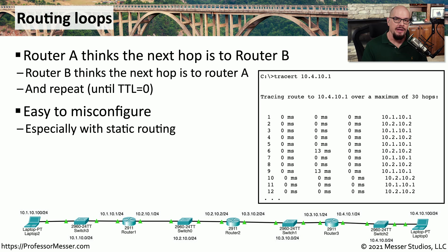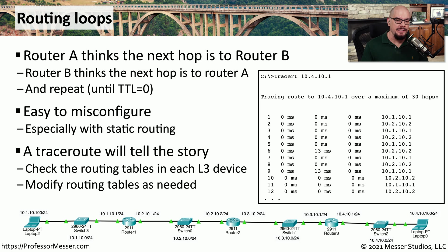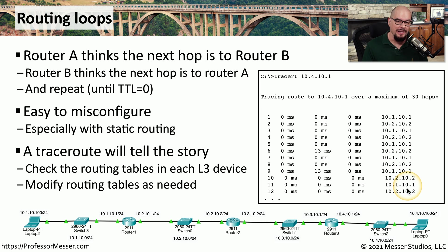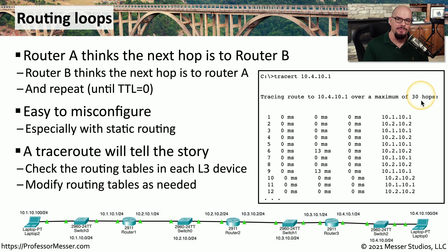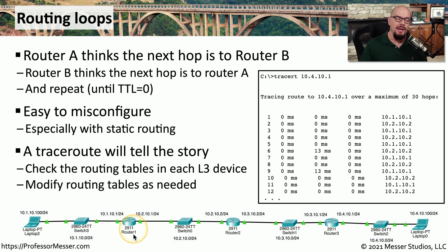If you're managing a statically routed network, routing loops can be very easy to misconfigure — a single configuration change may set up a loop. Fortunately, you can easily see this with a traceroute: you'll see the route go to 10.1.10.1, then the next hop is 10.2.10.2, then back to 10.1.10.1, then back to 10.2.10.2, and so on — continuing until it hits the maximum hops for that traceroute. To resolve this, log into the routers, review the configuration, and make sure the routing tables point to the correct next hop.